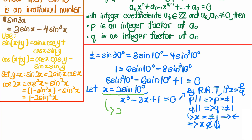This means x is not a rational number. Since x = 2·sine(10°) is irrational, sine(10°) is also irrational. Therefore we are done.